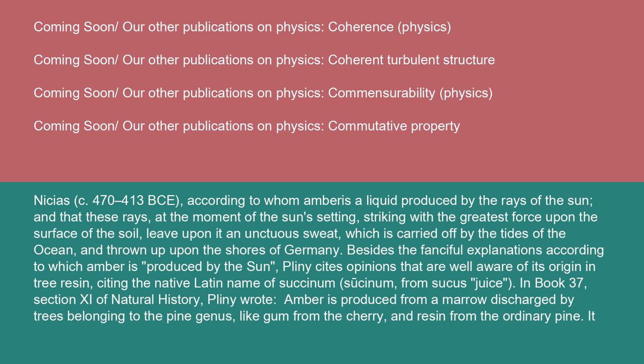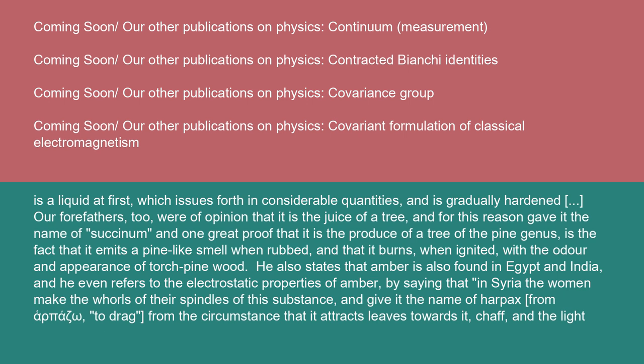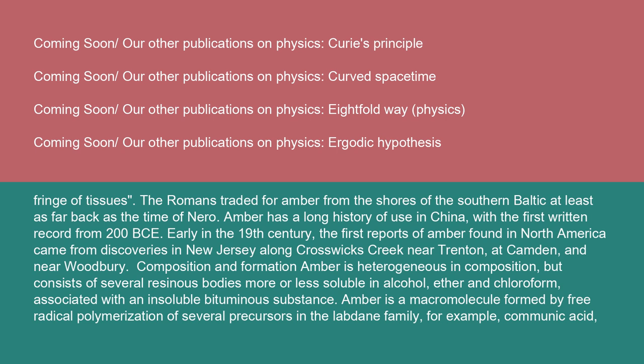In Book 37, Section 11 of Natural History, Pliny wrote: "Amber is produced from a marrow discharged by trees belonging to the pine genus, like gum from the cherry, and resin from the ordinary pine. It is a liquid at first, which issues forth in considerable quantities, and is gradually hardened. Our forefathers were of opinion that it is the juice of a tree, and for this reason gave it the name of succinum. One great proof that it is the produce of a tree of the pine genus is the fact that it emits a pine-like smell when rubbed, and that it burns, when ignited, with the odor and appearance of torch pine wood." He also states that amber is found in Egypt and India, and refers to its electrostatic properties, noting that in Syria the women make the whorls of their spindles of this substance and give it the name harpax, from a word meaning to drag, from the circumstance that it attracts leaves, chaff, and the light fringe of tissues. The Romans traded for amber from the shores of the southern Baltic, at least as far back as the time of Nero.